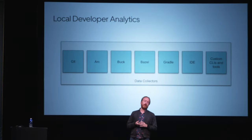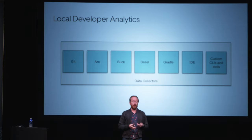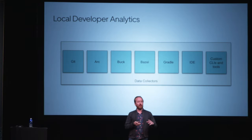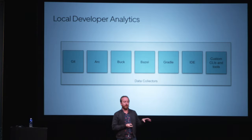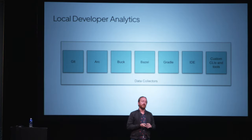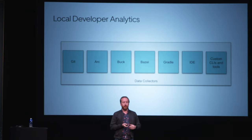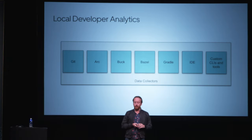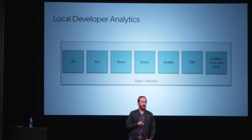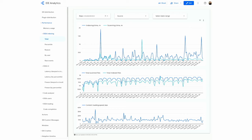The local hooks include: Git so we can get performance time; Arcanist, which is the CLI for Fabricator our code review tool (we're moving to GitHub); wrappers into Buck, Bazel, or Gradle to get build data; custom IDE plugins forwarding IntelliJ or VS Code data; and custom CLIs throughout the company that emit logs to LDA. Here's one of the debugging dashboards for IDE — we're measuring indexing time, code analysis, and a bunch of stuff. We're working closely with JetBrains to improve monorepo performance in IntelliJ. Having dashboards and alerting has been really powerful.